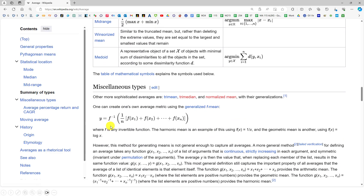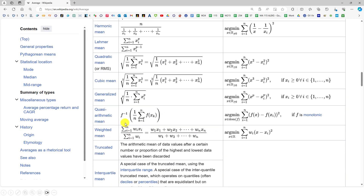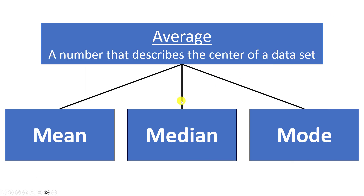So really when we say the word average we really could mean any of these different things. But right now we're just going to be thinking of the word average as meaning either the mean, the median, or the mode. So let's talk about each of those one at a time.